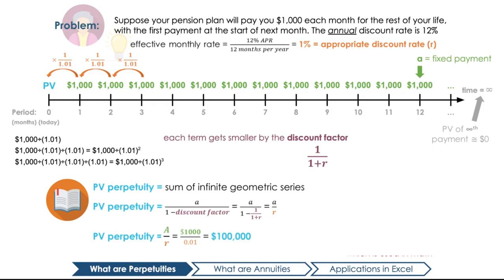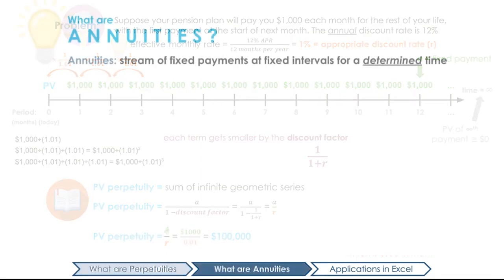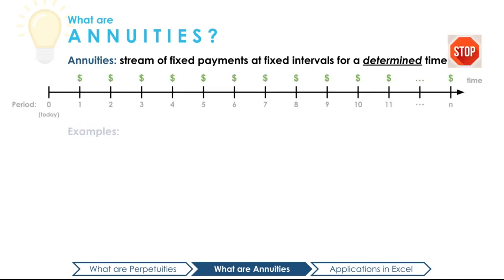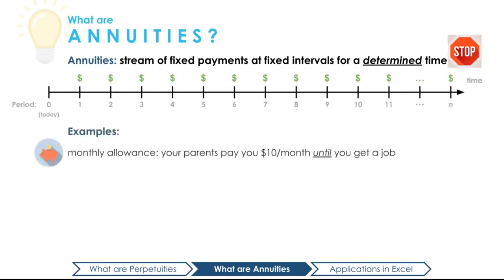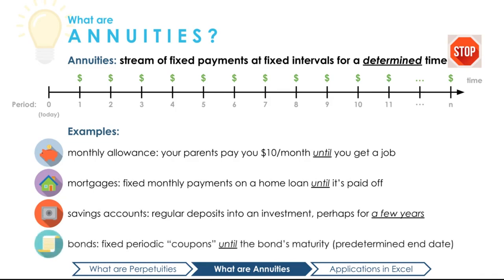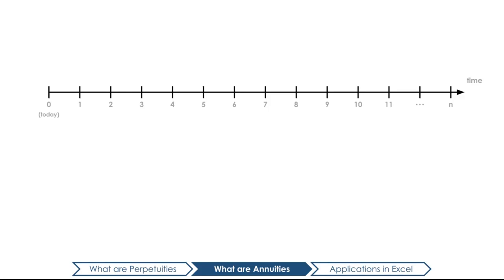Now that we understand perpetuities, let's talk about annuities. An annuity is similar to a perpetuity in that it involves a steady inflow of fixed payments at fixed intervals, just like the allowance example we discussed. However, unlike a perpetuity, an annuity does not go on forever — we receive a finite series of payments. My parents eventually cut me off and tell me to get a job. Other examples of annuities include mortgage or pension payments, regular deposits to an investment account, and, most notably, bond investments.